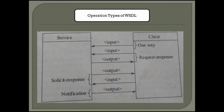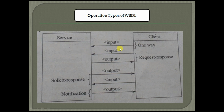What are the different types of operations in WSDL? We can have one-way communication and request-response communication. One-way communication means from client to service, you can get only the input — only the request will be there. There is no response.